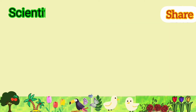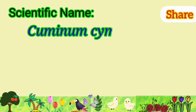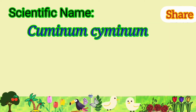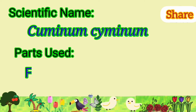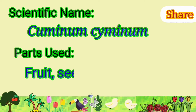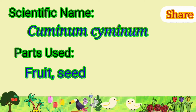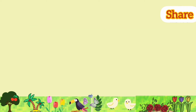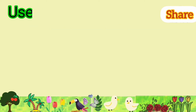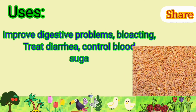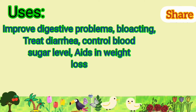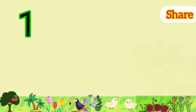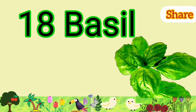Cumin: its scientific name is Cuminum cyminum. Parts used are fruit, root, and seeds. It is used to improve digestive problems, bloating, treat diarrhea, control blood sugar, and aid in weight loss.